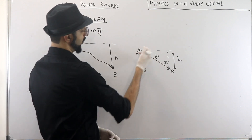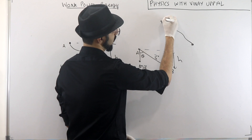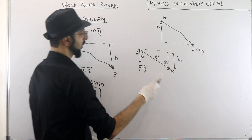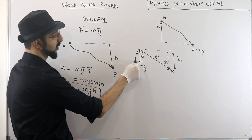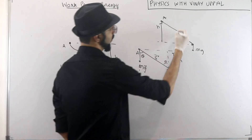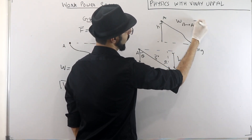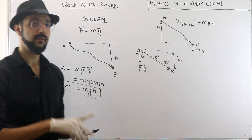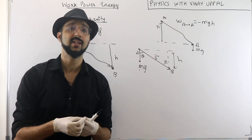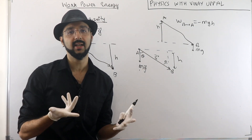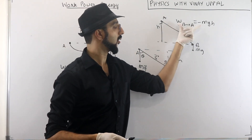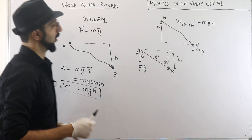By the same logic, if it goes from B to A — whatever path — the displacement vector is now upward. Work done is negative. So work done from B to A by gravity would be -mgH. If the body is ending up at a height H above the original position, then work done by gravity is negative mgh. As you go from bottom to top, work done will be -mgH.